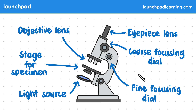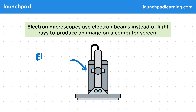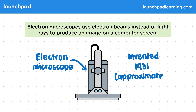What are electron microscopes? Electron microscopes use electron beams instead of light rays to produce an image on a computer screen. The electrons within the electron beam interact with the sample and are picked up by a detector. The electron microscope was invented much more recently by German scientists in 1931.